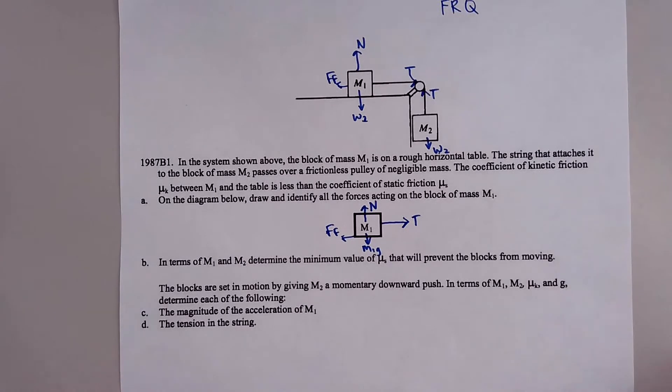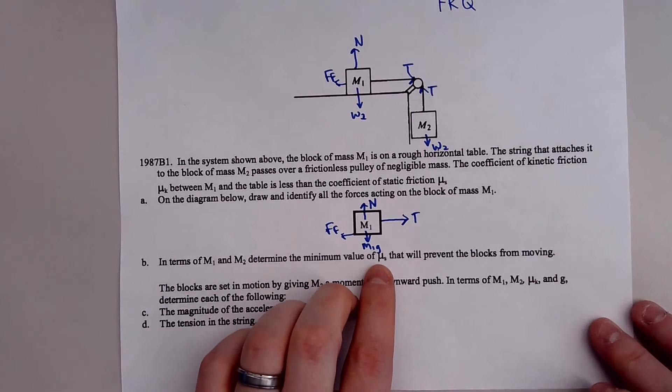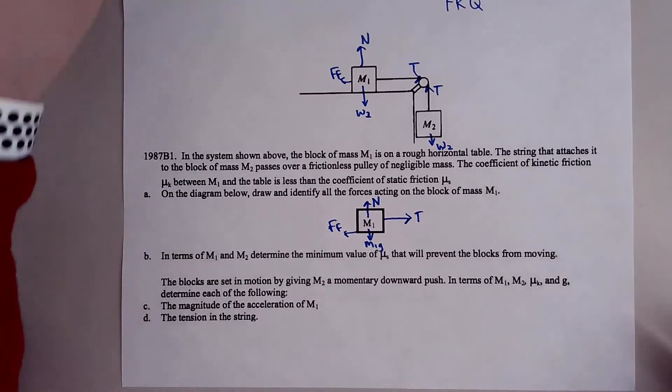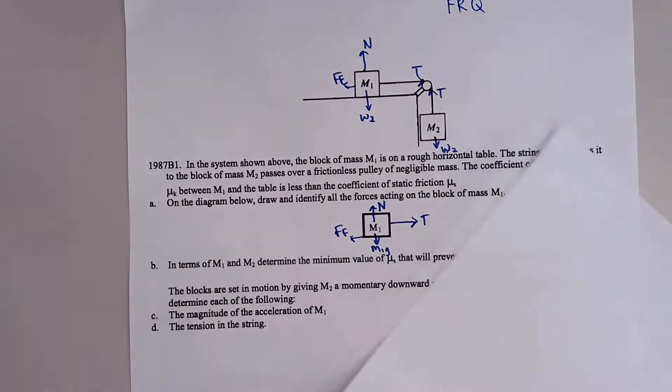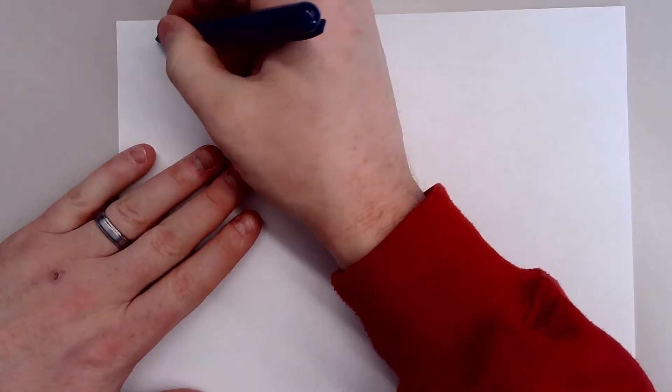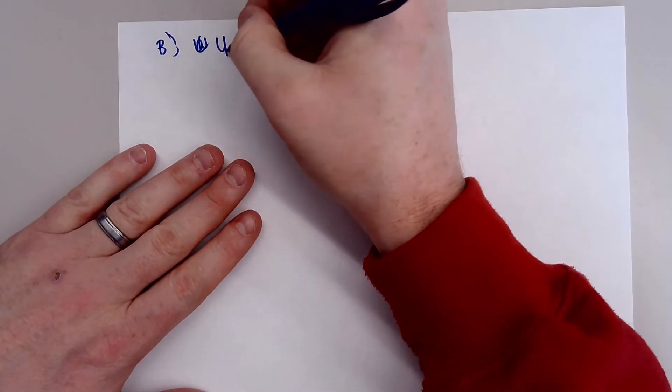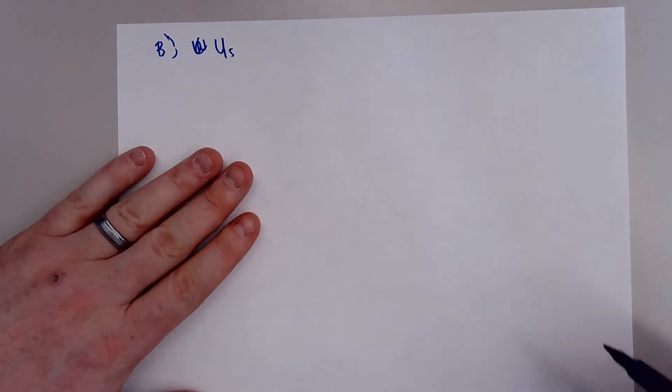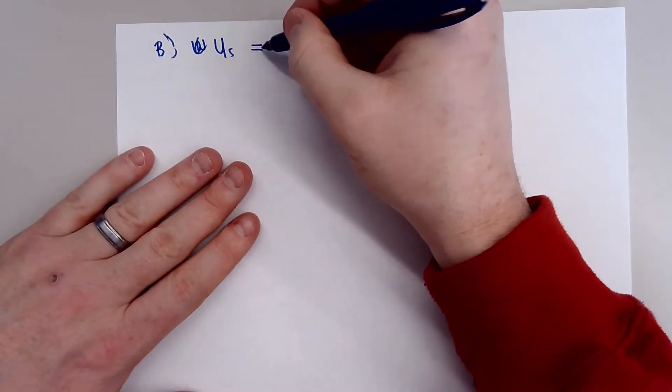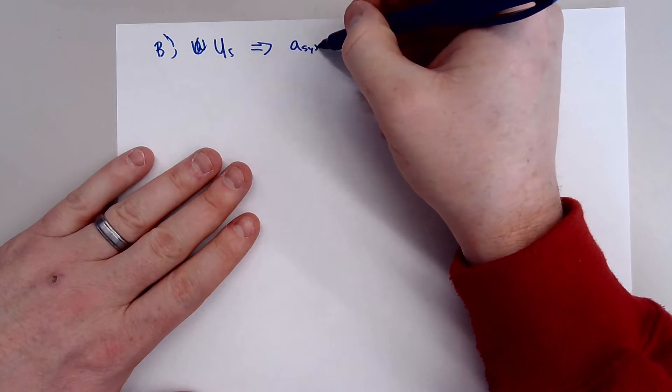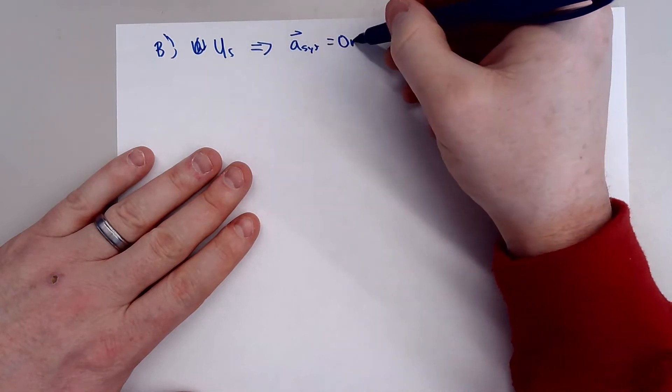So that's pretty much all it's asking for the first part. Now, B states, in terms of M1 and M2, determine the minimum value of the coefficient of static friction that will prevent the blocks from moving. Okay. So what's going to happen here is this. What B is asking is, sorry, how much static or what's the coefficient of static friction has to be in order for acceleration in our system to equal 0 meters per second squared.